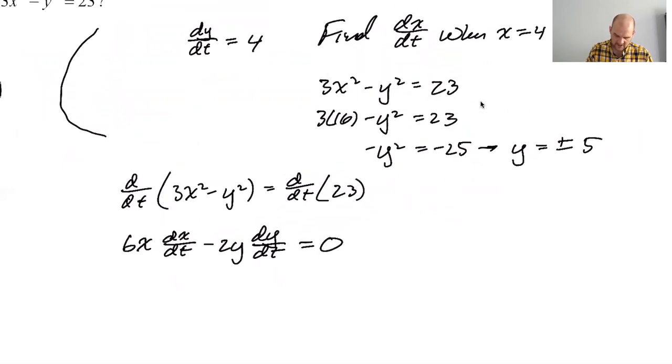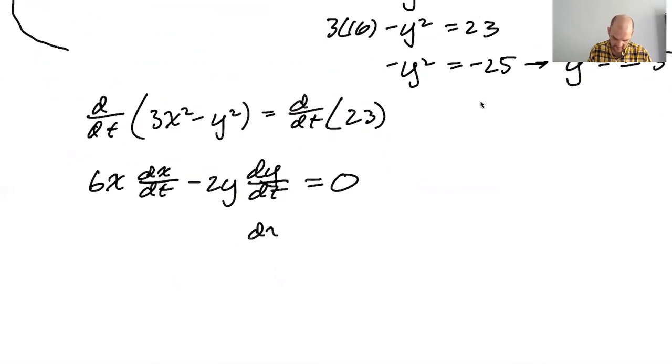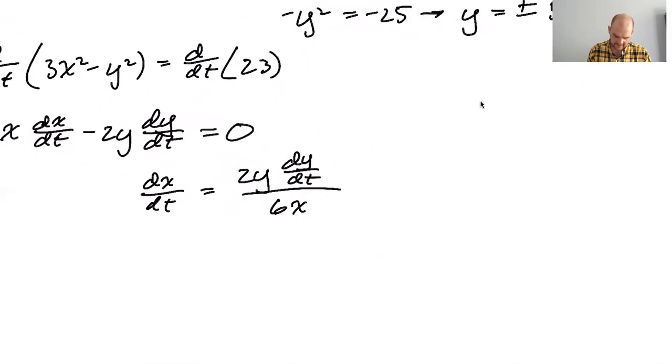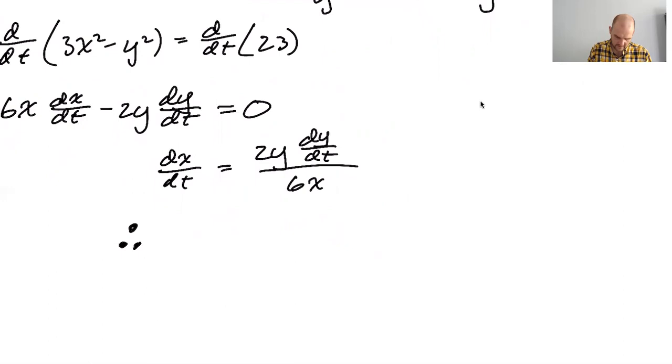So I'm going to find derivative with respect to t of three x squared minus y squared is the same as the derivative with respect to t of 23. So this is going to give me 6x chain rule dx dt minus 2y chain rule dy dt equals zero. So dx dt is 2y dy dt over 6x.